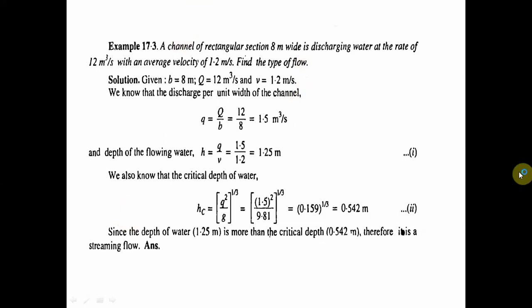We know that the discharge per unit width q = Q/b = 12/8 = 1.5 m²/s. The depth of flow h = q/V = 1.5 divided by 1.2 = 1.25 meters.